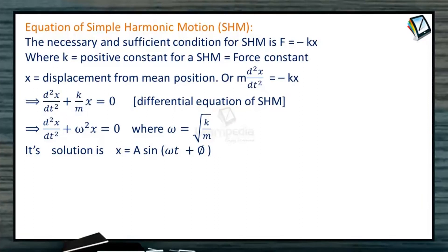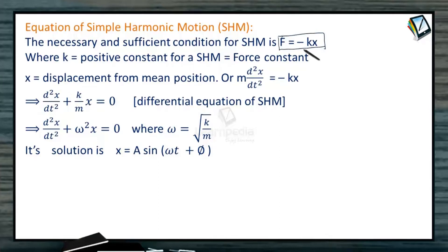Let us write some equations for simple harmonic motion. For a particle to perform simple harmonic oscillation, the condition is that the force acting on the particle must be proportional to its displacement from a fixed position and opposite to it — where K is a positive constant, which is the force constant and is a characteristic of the system. So the force acting on a particle performing simple harmonic oscillation is proportional to the displacement and is always opposite to it.